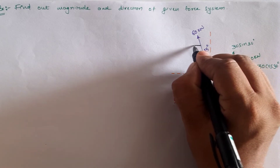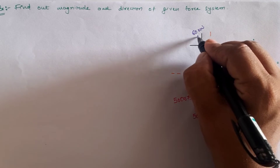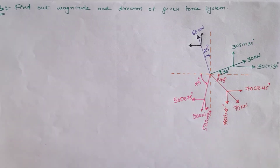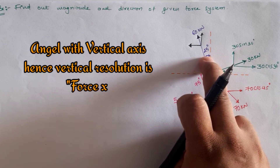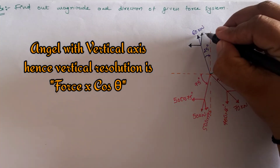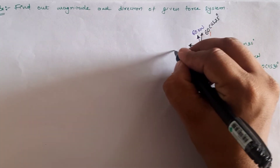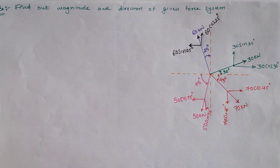For the 60 kilonewton force, one resolution is along the horizontal and one is along the vertical. Observing the arrowhead, we have an outward directional force. The 25-degree angle is measured from the vertical, so the vertical component is 60 cos 25 and the horizontal component is 60 sin 25.